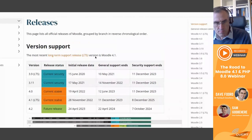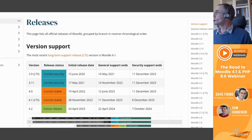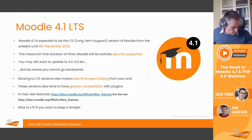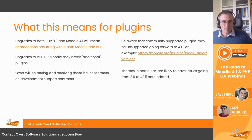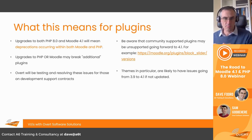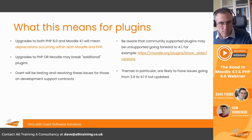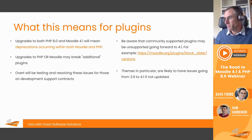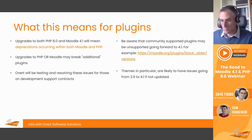This is a useful table to refer to going forward as you're using Moodle, if you're curious about your upgrade path. Upgrading to Moodle 4.1 or to PHP 8.0 will potentially break your plugins — something to be aware of, especially for those using custom development. We will be testing and resolving issues for those as mentioned. Themes in particular are likely to have issues going from 3.9 to 4.1. Community supported plugins may also break if they're not supported on Moodle 4.1.